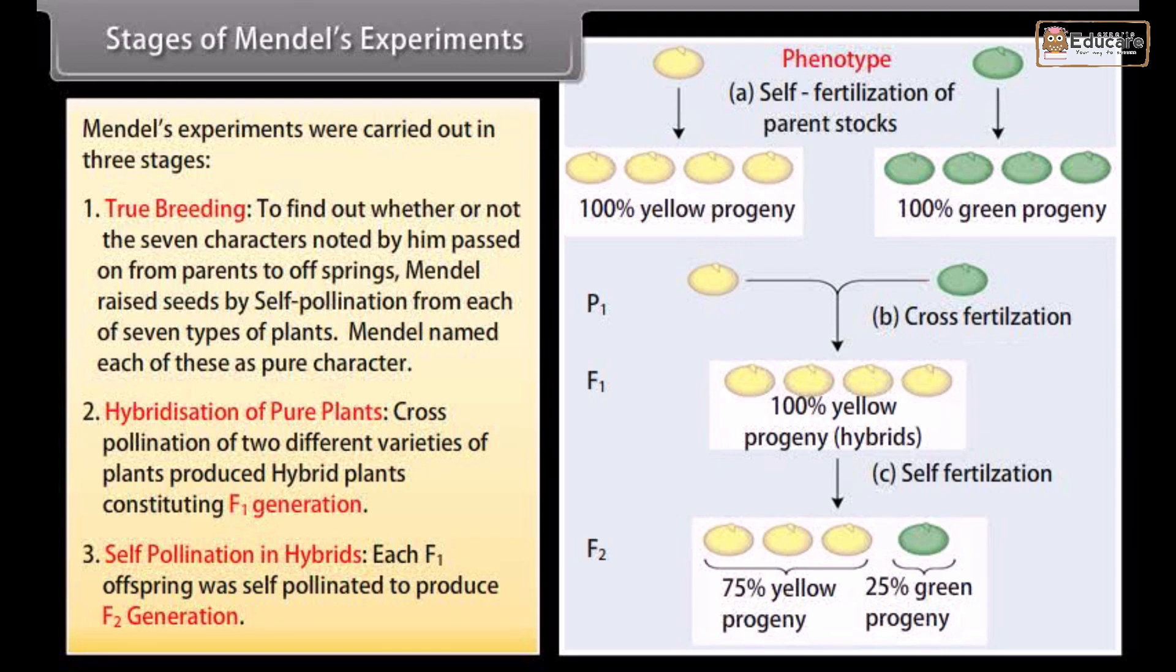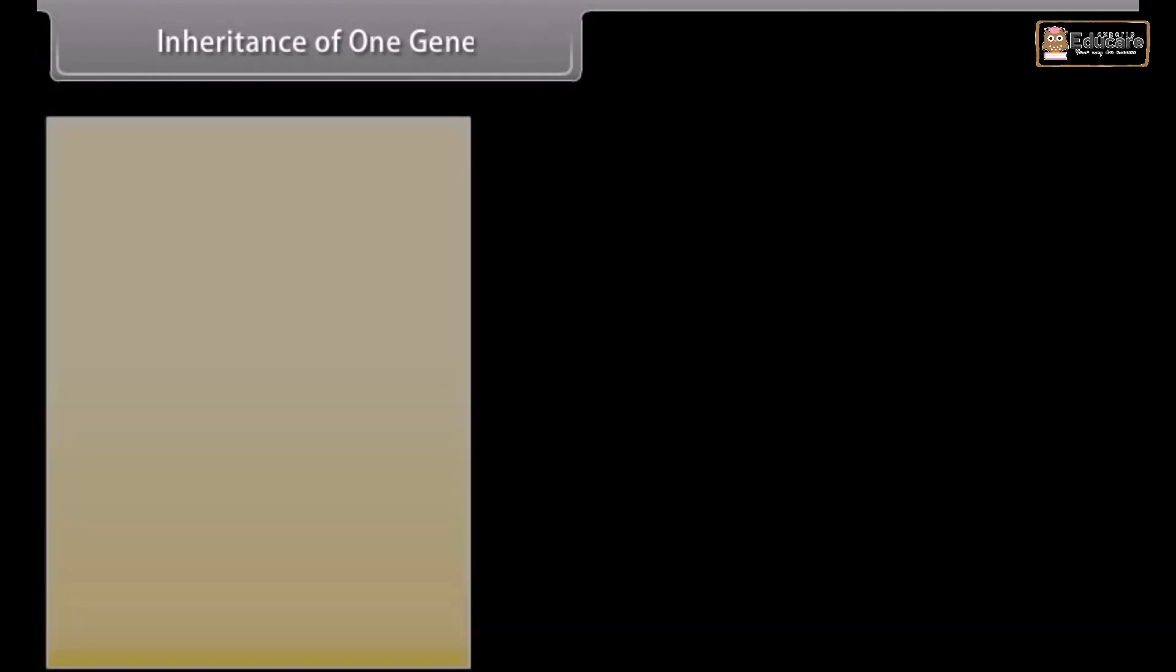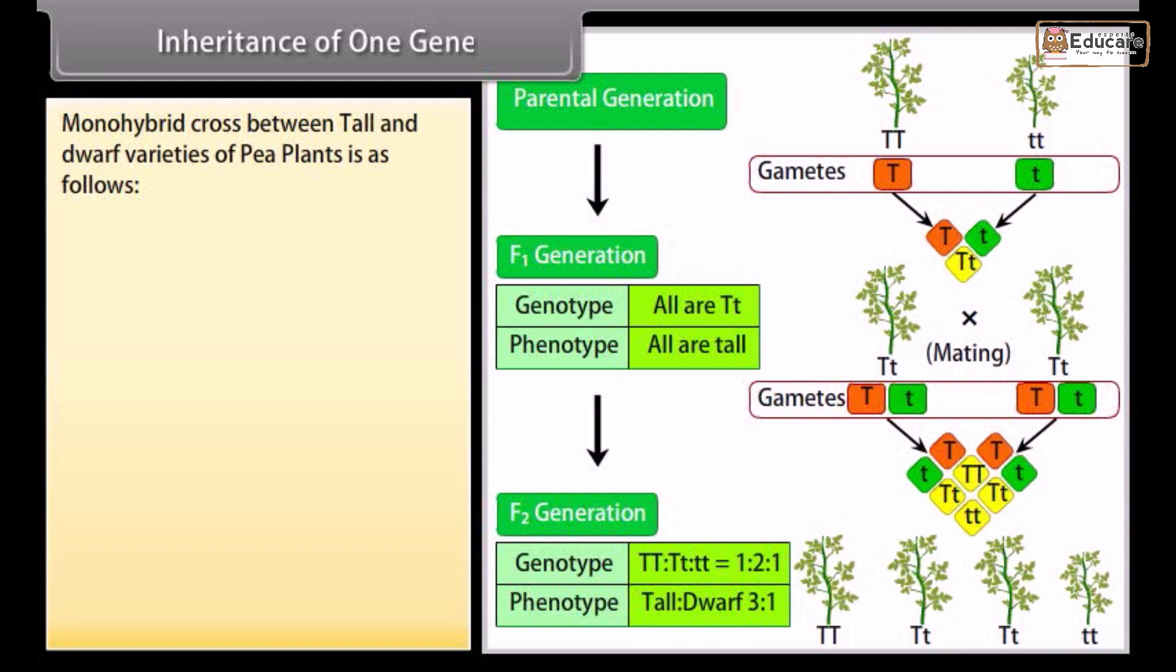Inheritance of one gene. Monohybrid cross between tall and dwarf varieties of pea plants is as follows.